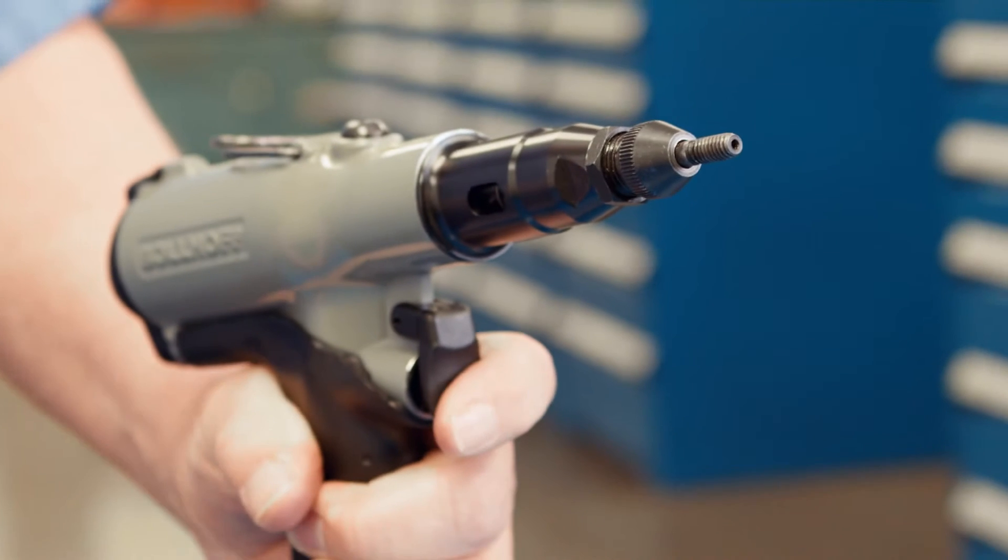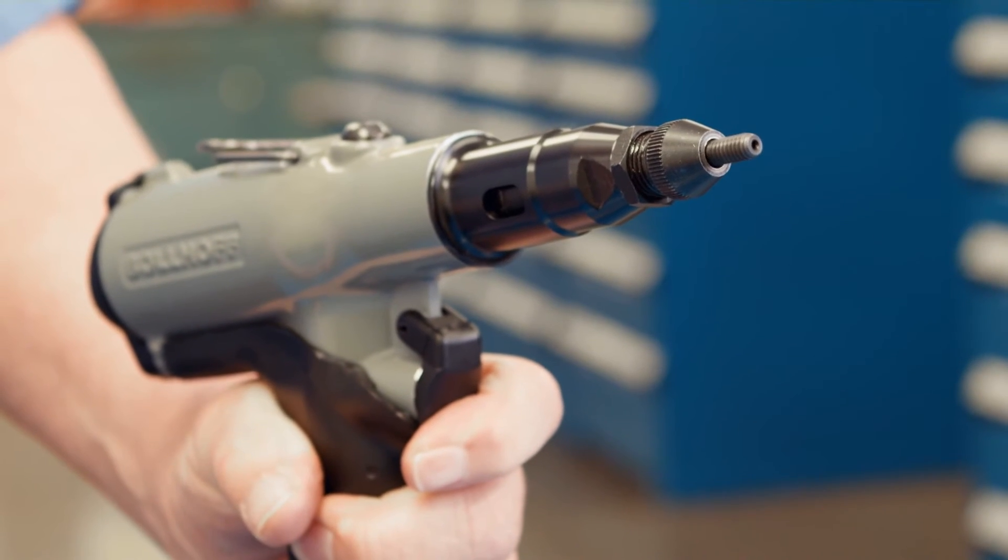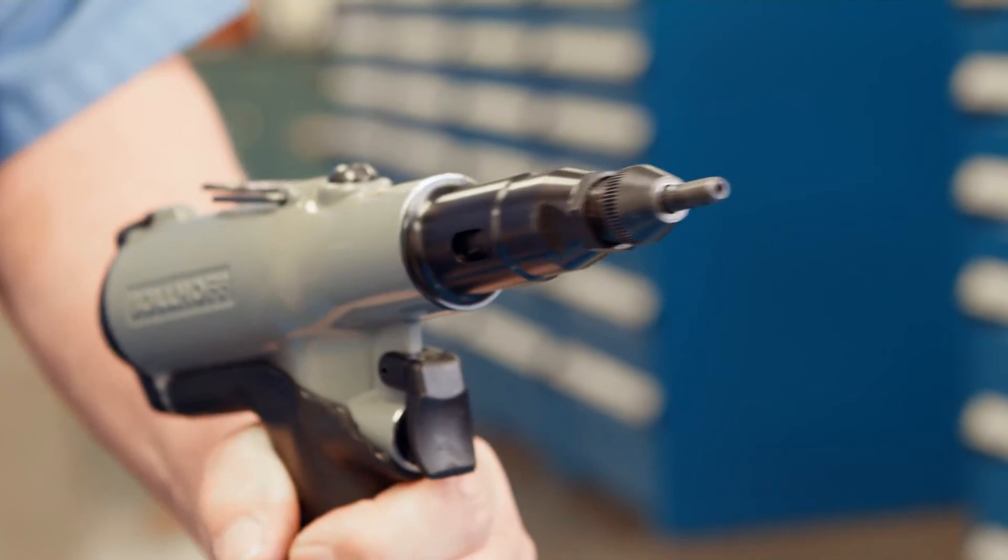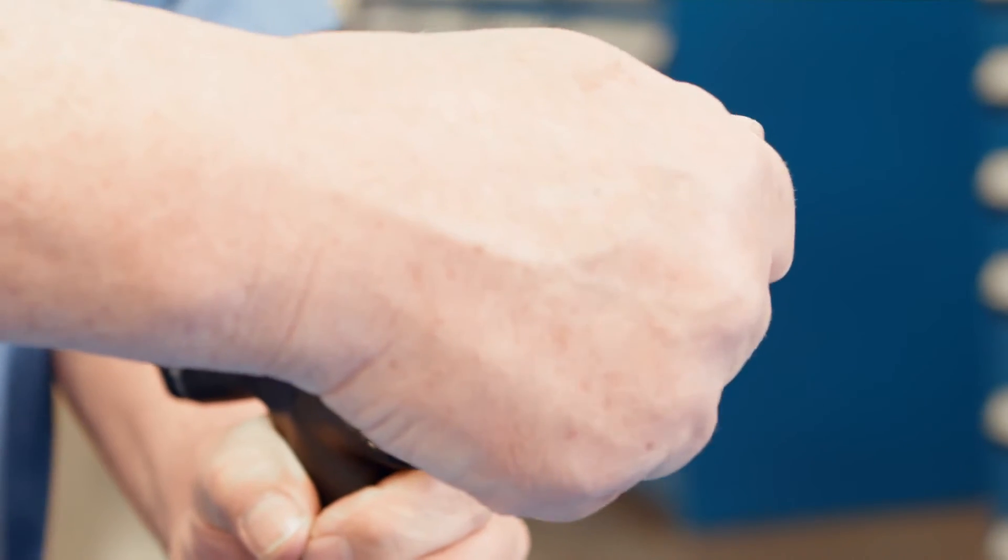Next, cycle the P2007 by pressing and holding the trigger until the tool cycles in, then out. This procedure only takes a few seconds.